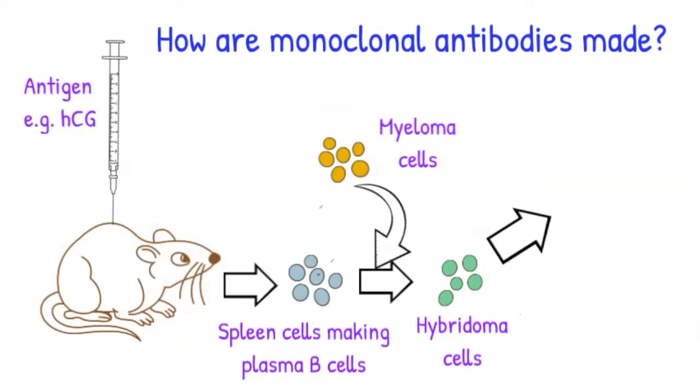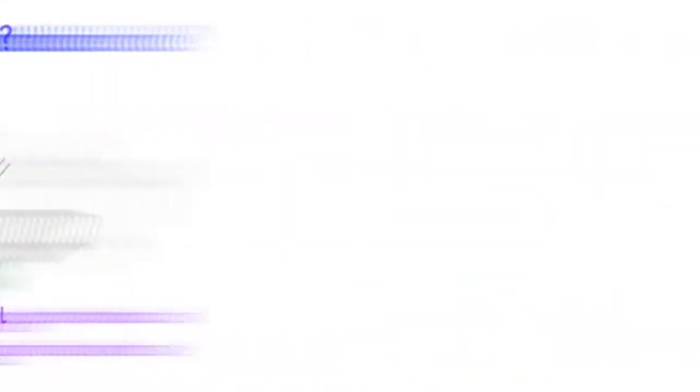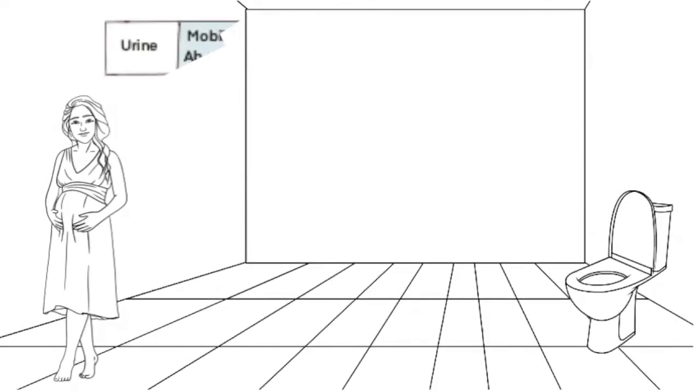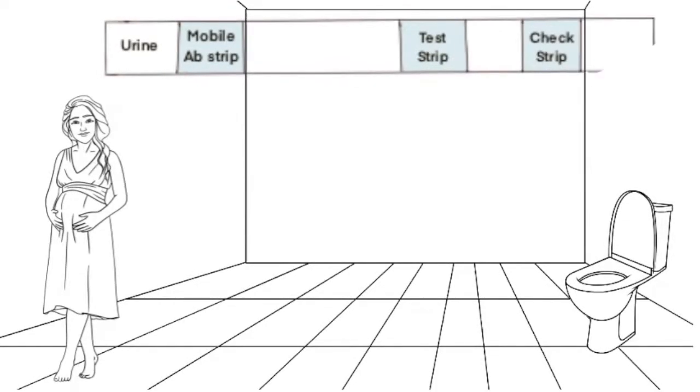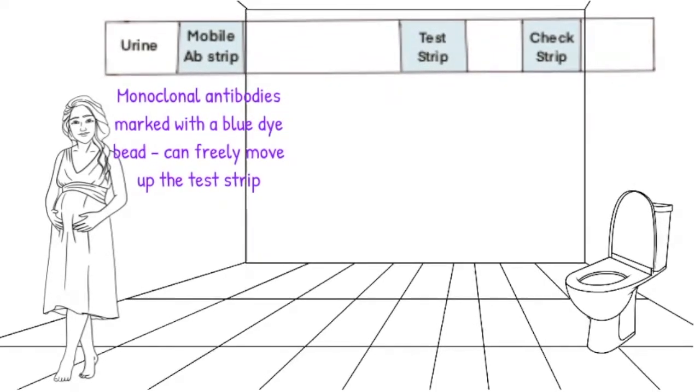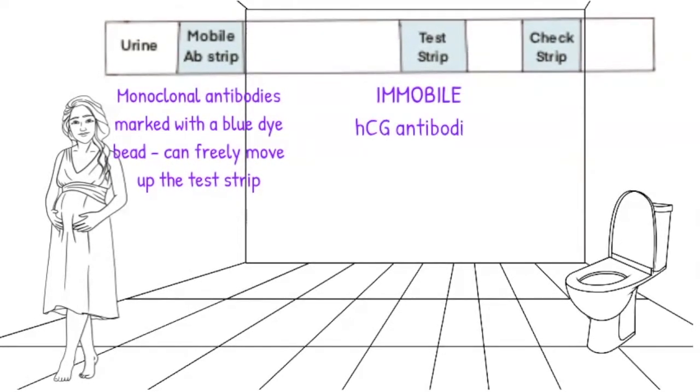These hybridoma cells divide and produce millions of monoclonal antibodies specific to the HCG. These monoclonal antibodies can then be marked with a dye, usually with a blue dye, and then incorporated into the pregnancy test strip at the mobile antibody area. Further up the strip are other antibodies. In the test strip, there are more HCG antibodies, but these are not mobile. They are attached to the test area, so they cannot move.